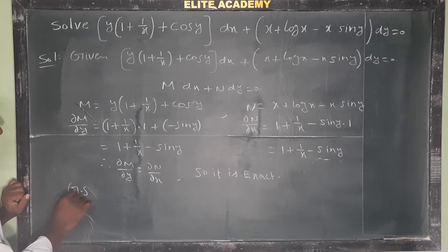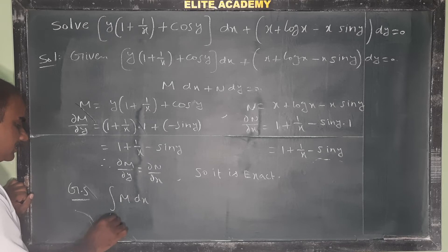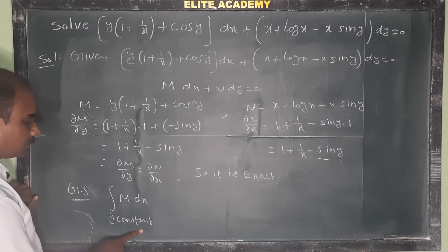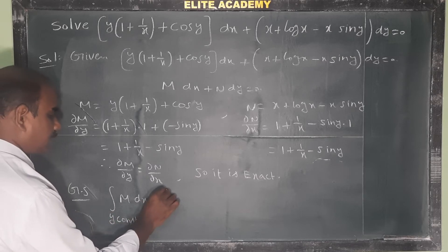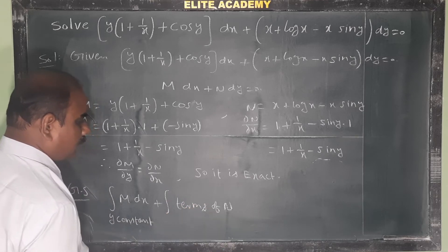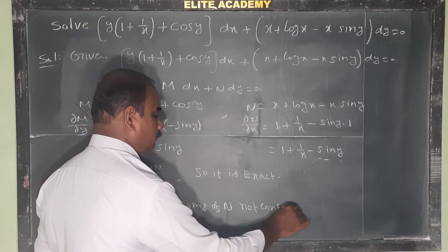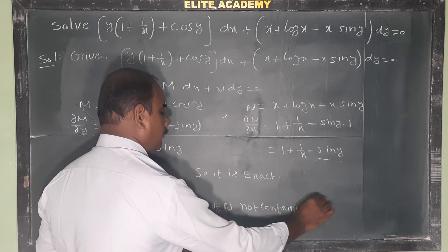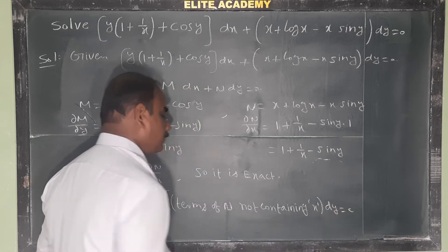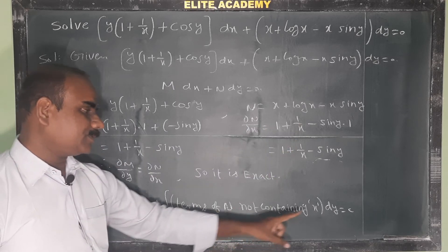For an exact differential equation, the solution is: integral of M dx (y constant) plus integral of terms of N not containing x dy = C. Observing N = x + log x - x·sin y.